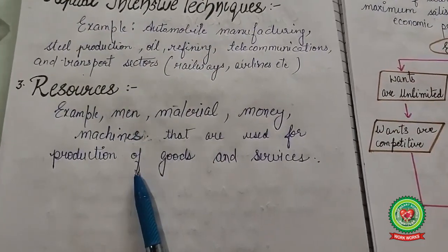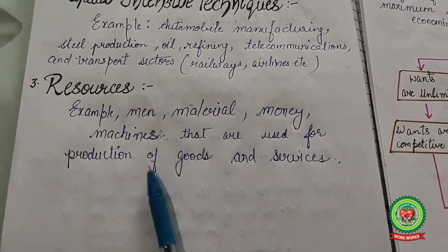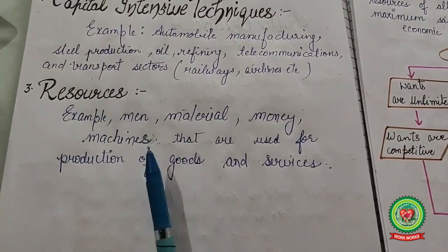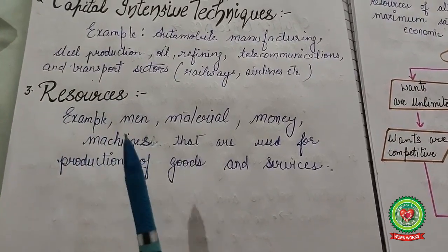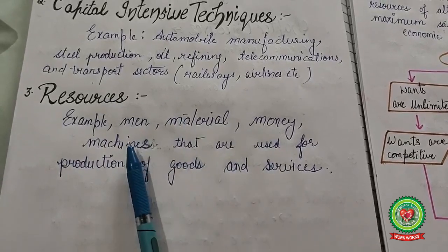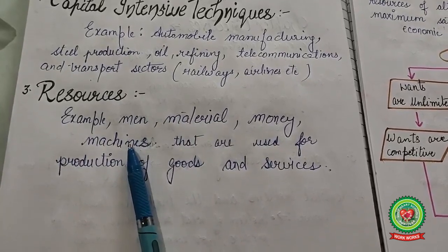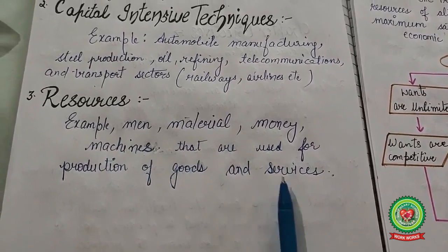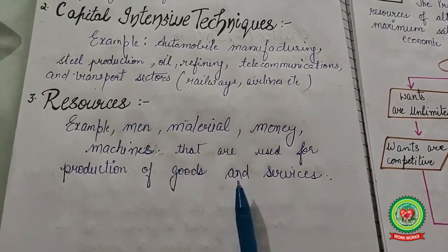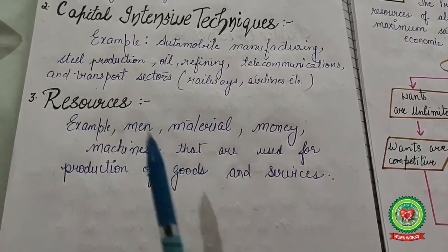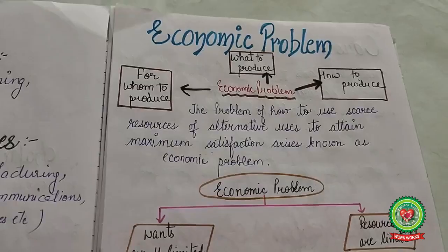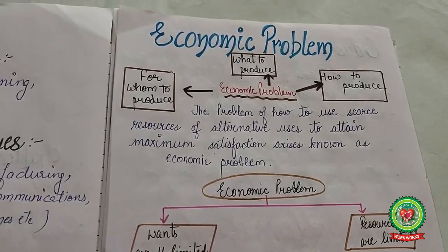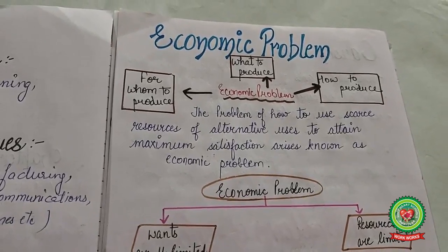The next key term is resources. Resources may be natural resources, or may be materials, machines, or money that are used for the production of goods and services.